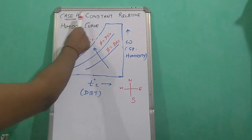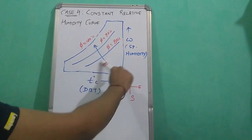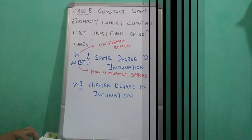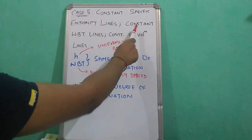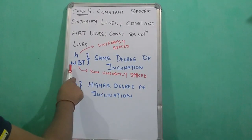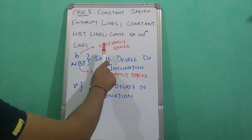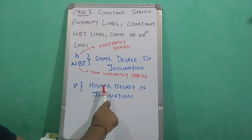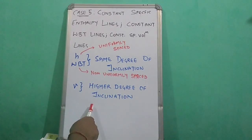Case 4: constant relative humidity curves are parallel to the saturation curve. Case 5 covers constant specific enthalpy lines, constant wet bulb temperature lines, and constant specific volume lines. Enthalpy and wet bulb temperature lines have the same degree of inclination. Enthalpy lines are uniformly spaced, while wet bulb temperature lines are non-uniformly spaced. Specific volume lines have a higher degree of inclination. We will see them directly on the psychrometric chart.